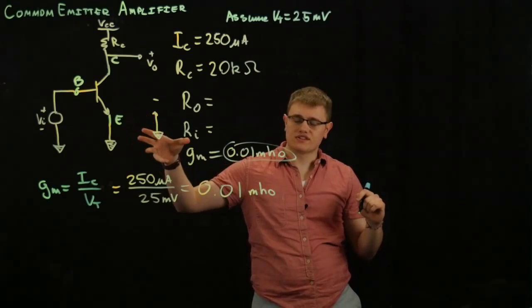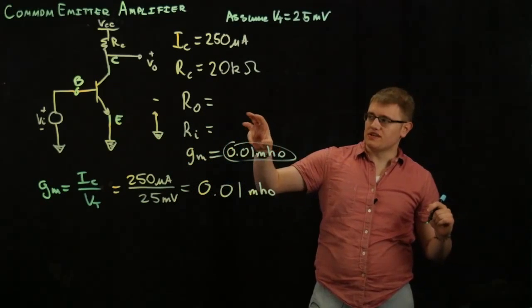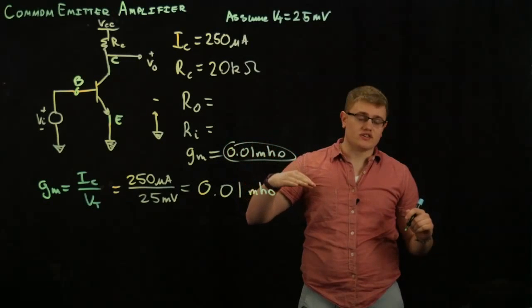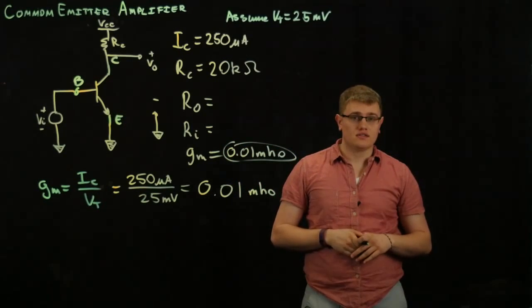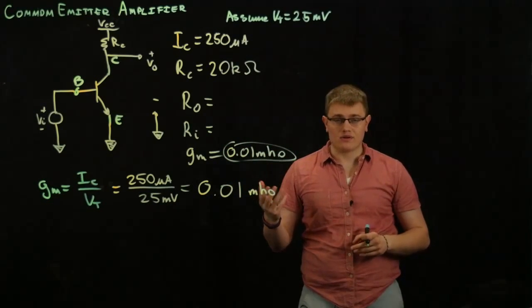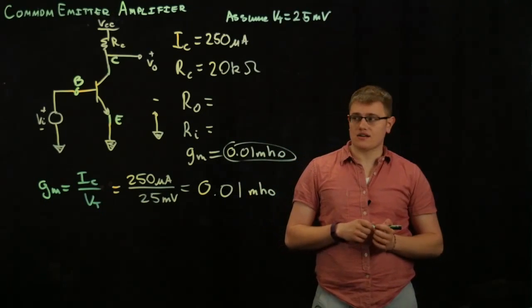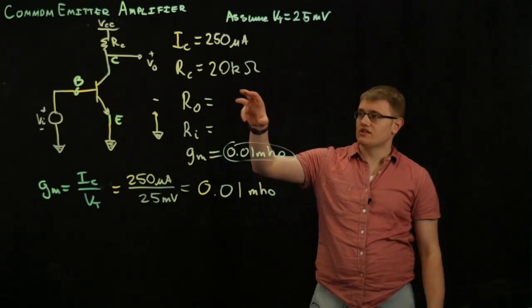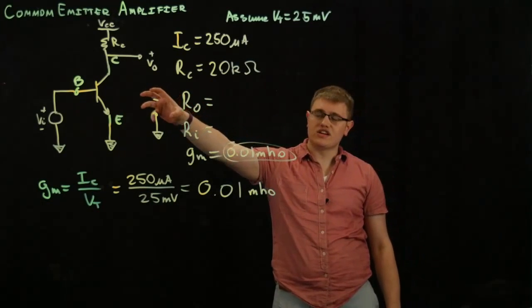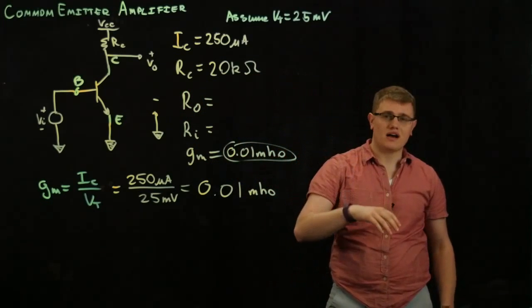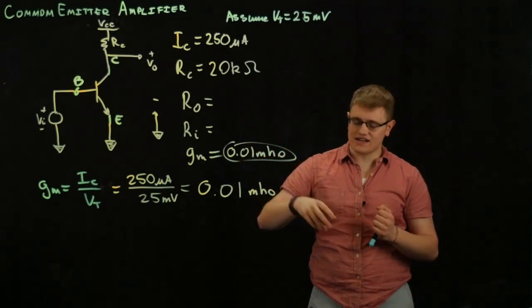Now, in small signal analysis, we take our BJT and we change it into a representative model. I like to use the hybrid pi model. Some people use the T model. In this example, we're going to be using the hybrid pi model.